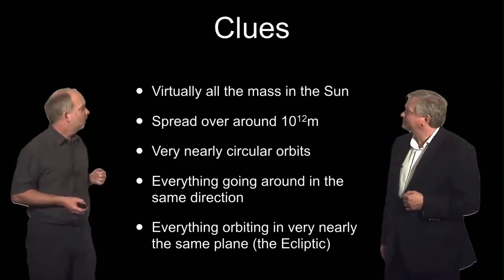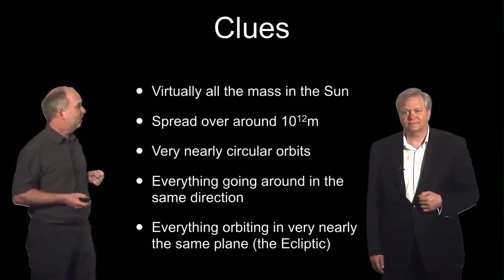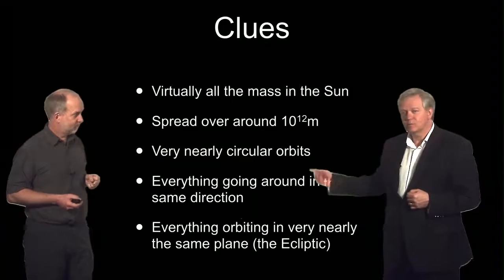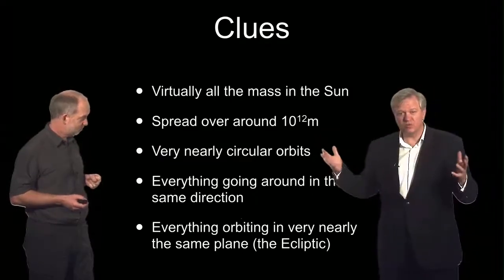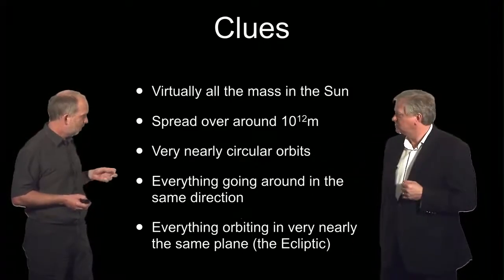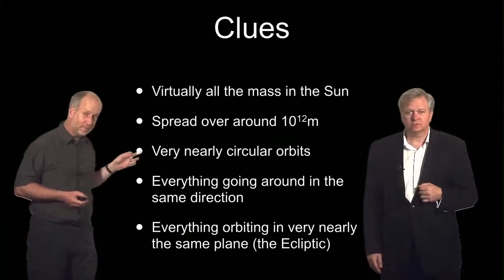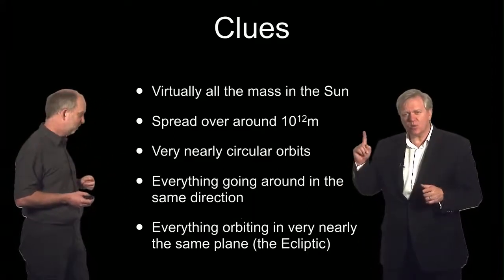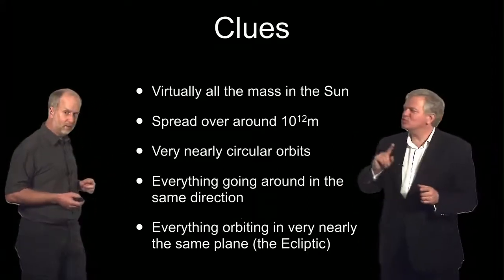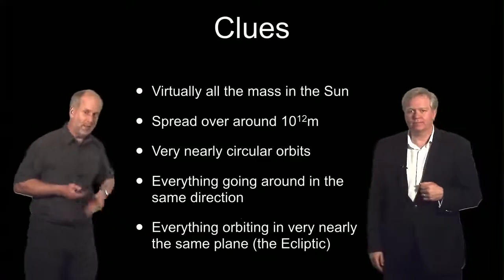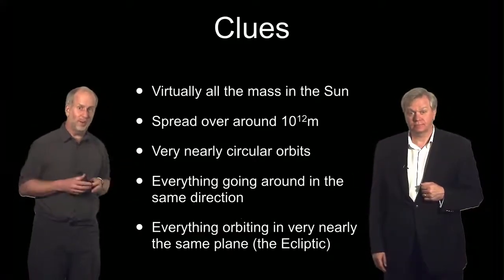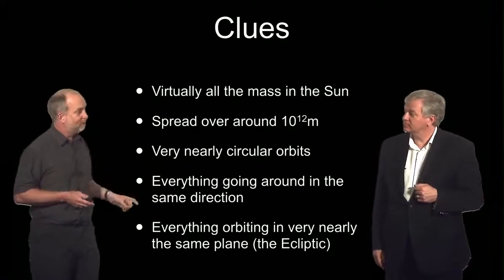So here are our clues. Virtually all the mass is in the sun. And it's spread out over 10 to the 12 meters, so it has a certain scale. Orbits are pretty damn near circular. And everything's going around in the same direction. And in the same plane, the ecliptic plane. So any theory of solar system formation has to explain these facts.